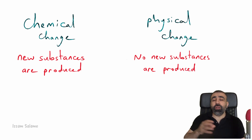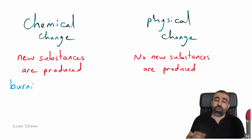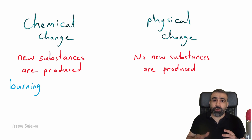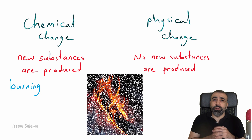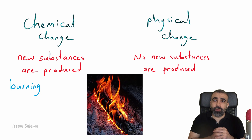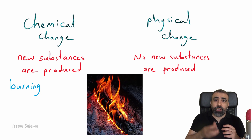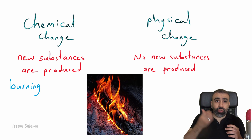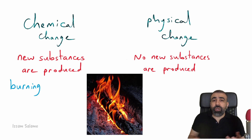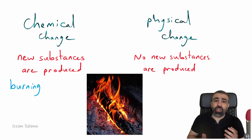For example, let's talk about burning. If you burn wood and you get ashes, can you return the ashes back to wood? We cannot. Here we have new substances being produced, and this change is irreversible — we cannot return it back.